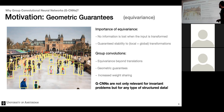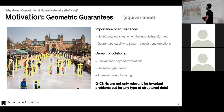With group convolutions, we extend this notion of equivariance beyond translations — making the network equivariant also to rotations, scaling, or other group transformations. This provides geometric guarantees such as invariance and equivariance, and it increases the opportunity for weight sharing: now I can detect a feature not only over positions, but also over rotations.